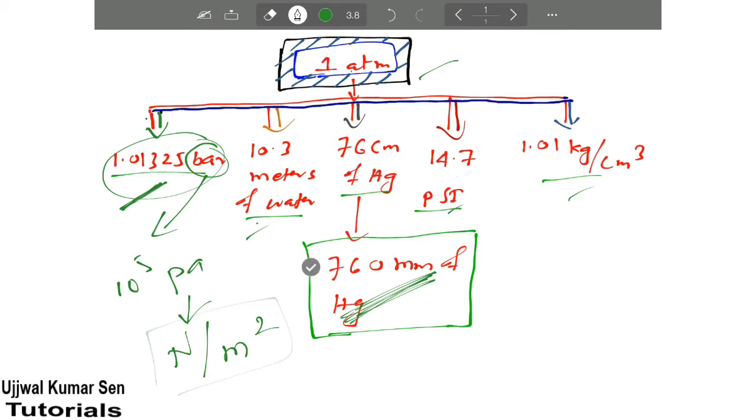Right now what is next? One atmospheric pressure is equal to 10.3 meters of water. So this is not that much useful. Most of the time they will ask questions from this one and this one, sometimes this one also.